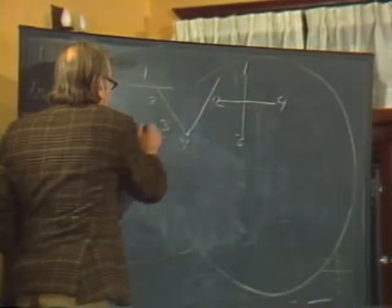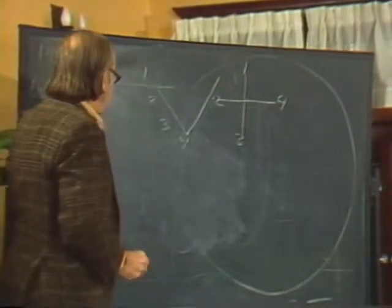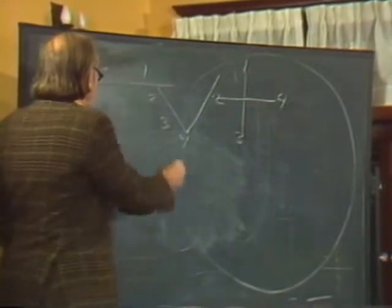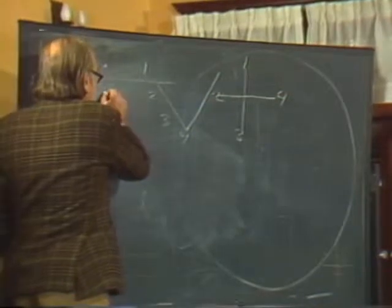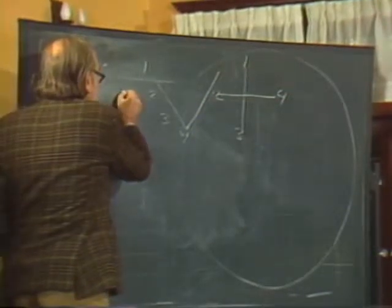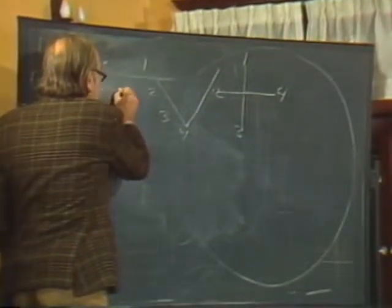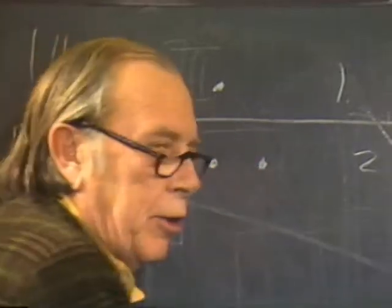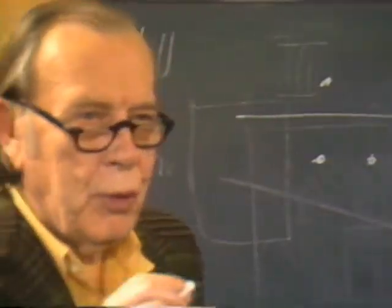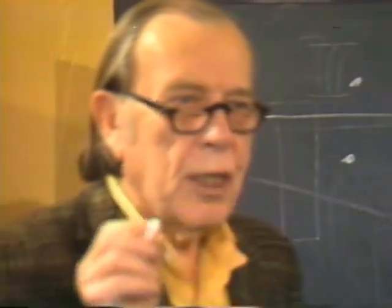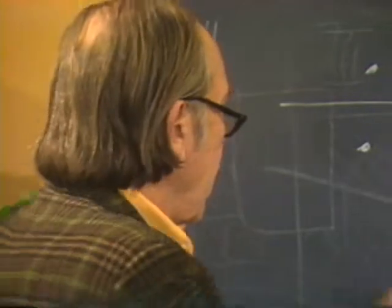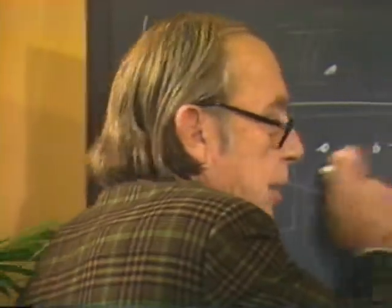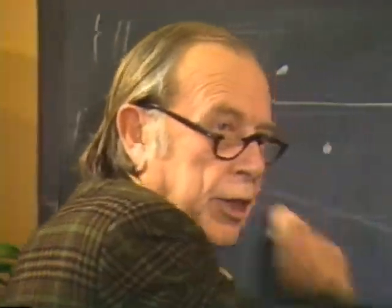Number one is a point. We can say two is like a line, but another way to say it is give it two points, because two points determine a line. You can also think of the binary thing — two, binary.